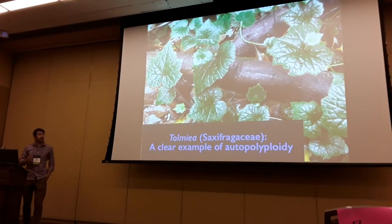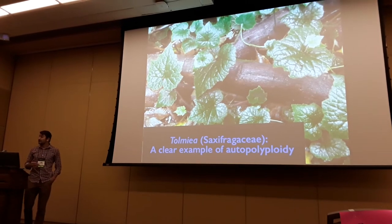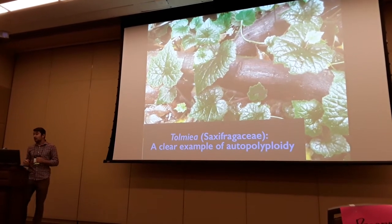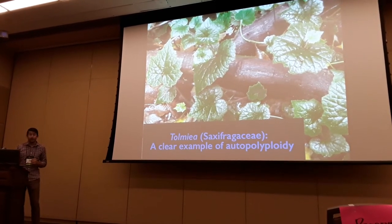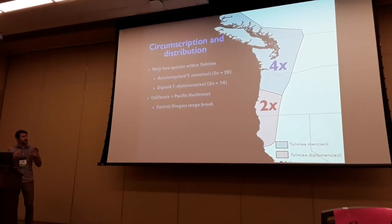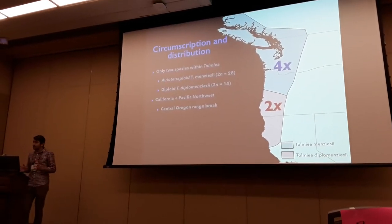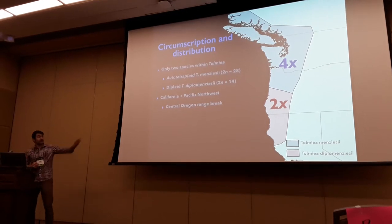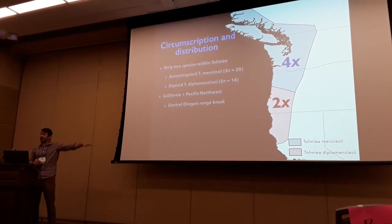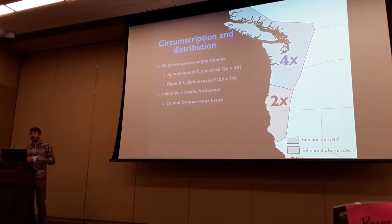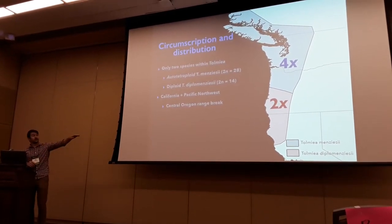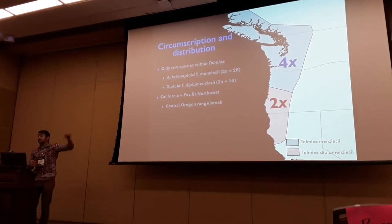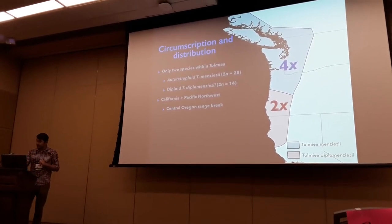I work within the genus Tolmia. This is a member of the Saxifragaceae, and this is really one of the clearest examples of autopolyploidy that we know of in nature. It's a really nice, simple system for these kinds of studies. There are only two species within the genus: a diploid that occurs south of central Oregon, which gave rise to an autotetraploid — one genome duplicated — that occurs north of central Oregon.